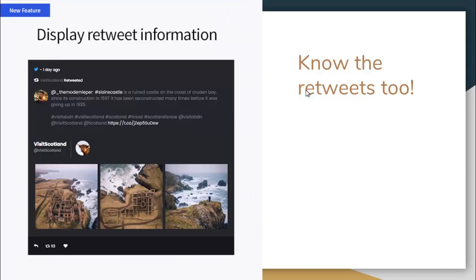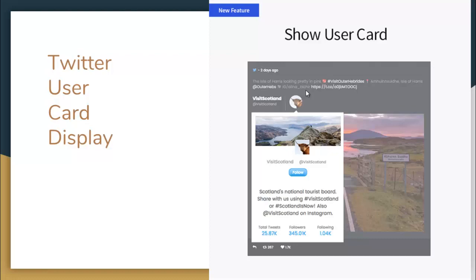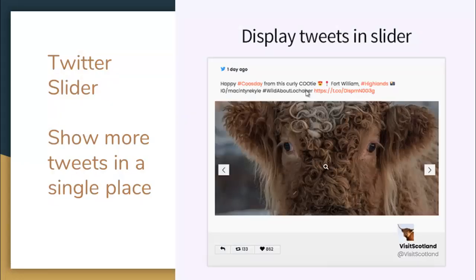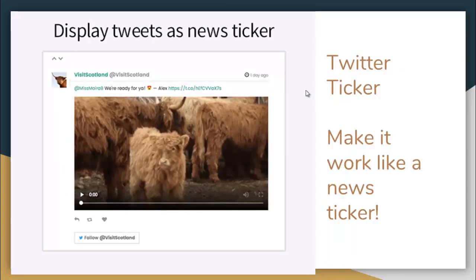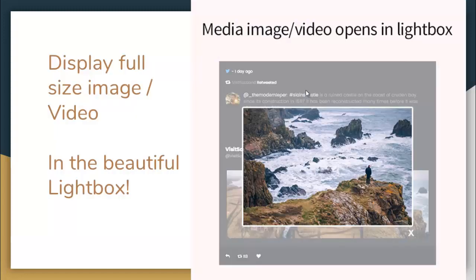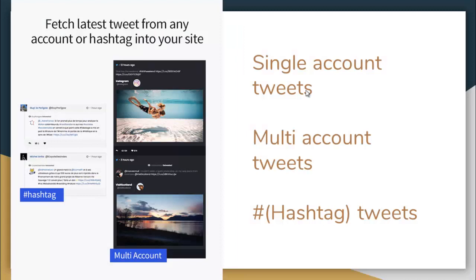It displays retweet information and shows user cards. It generates shortcodes so you can display your Twitter feeds anywhere on your website. It displays tweets in a slider so you can show more tweets in a single place, and displays tweets as a news ticker. A timeline layout theme is also included for a better way to present time-relevant tweets. Your media such as images and videos open up in a beautiful lightbox. It can fetch the latest tweets from any account or hashtag — single account, multi-account, or hashtag tweets.